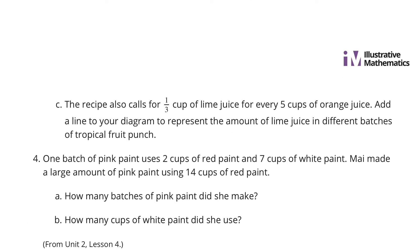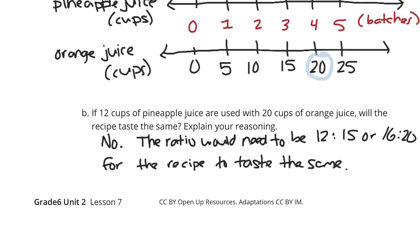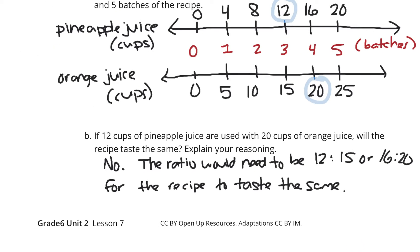The recipe also calls for a third cup of lime juice for every 5 cups of orange juice. Add a line to your diagram to represent the amount of lime juice in different batches of tropical fruit punch. I didn't know that was there. Forgot about that one. Let's add a line.